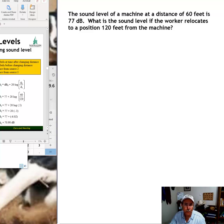I'll show you the formula and we'll work it out. We have a machine with a sound level of 77 decibels when the worker is 60 feet from that machine. What is the sound level if the worker relocates to a position 120 feet from the machine? Again, workers 60 feet from the machine, they're exposed to 77 decibels. We move them further away to a distance of 120 feet. What is the decibel level exposure in that position?